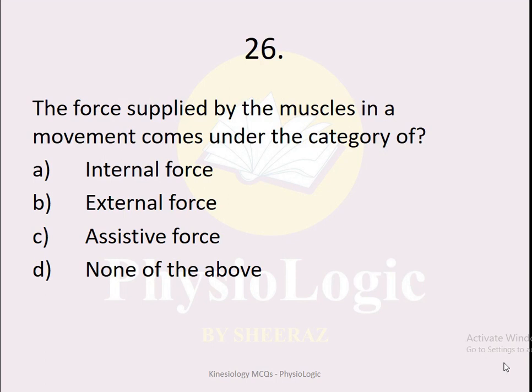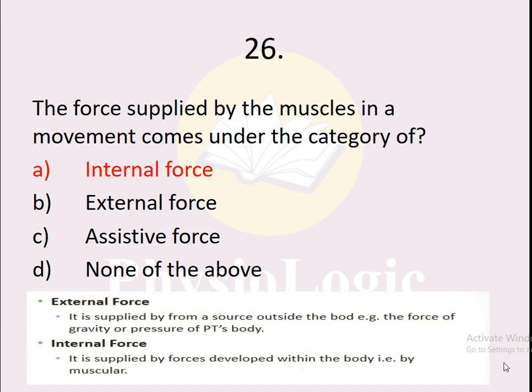MCQ number 26: The force applied by the muscles in a movement comes under the category of — option A internal force, option B external force, option C assistive force, option D none of the above. The correct option is internal force. There are two types of forces: external force is supplied by a source outside the body such as gravity or the physiotherapist's hands, while internal force is supplied by forces developed within the body, which is always muscular.